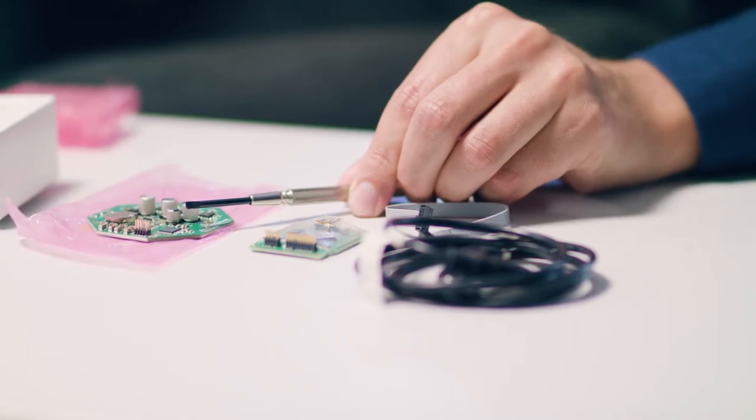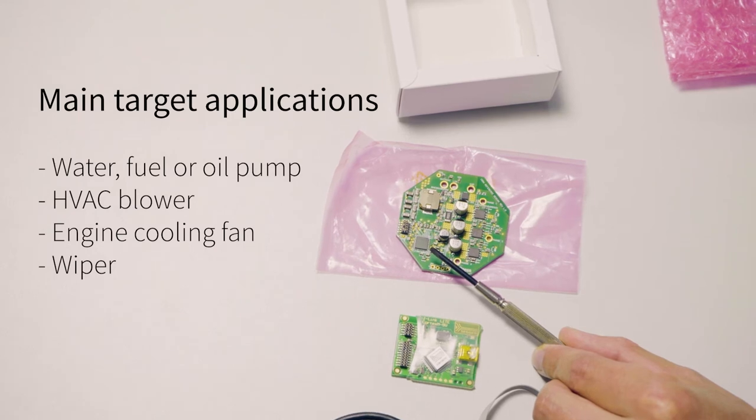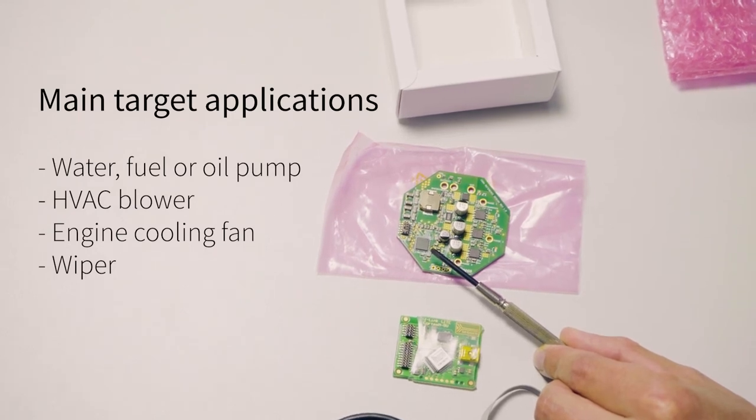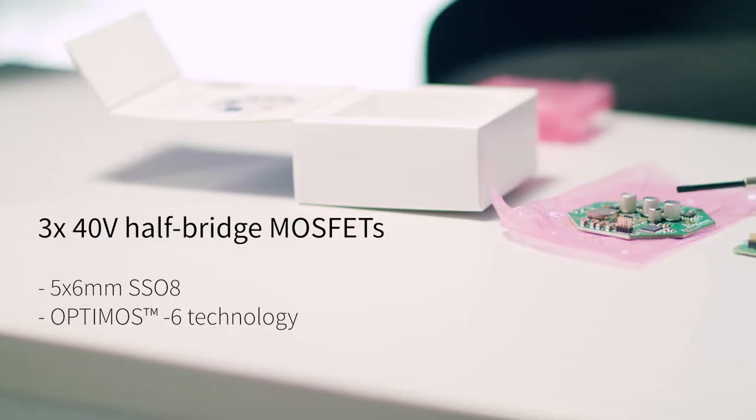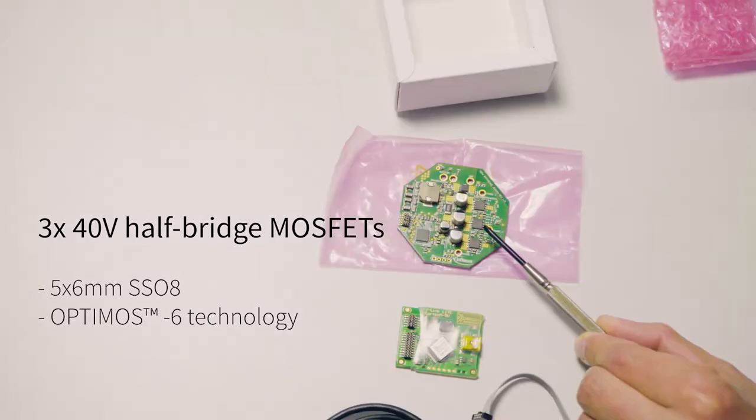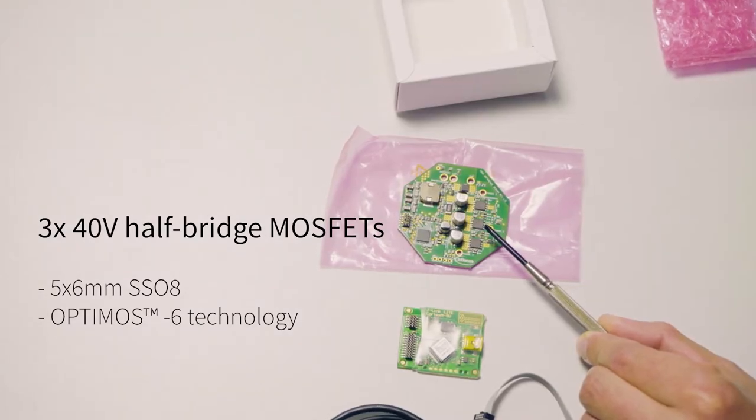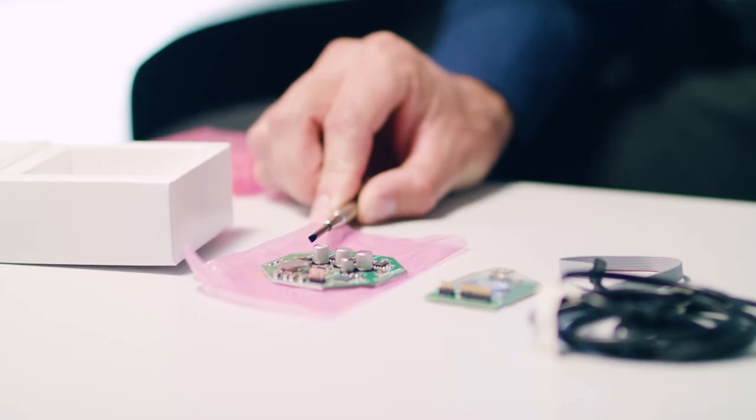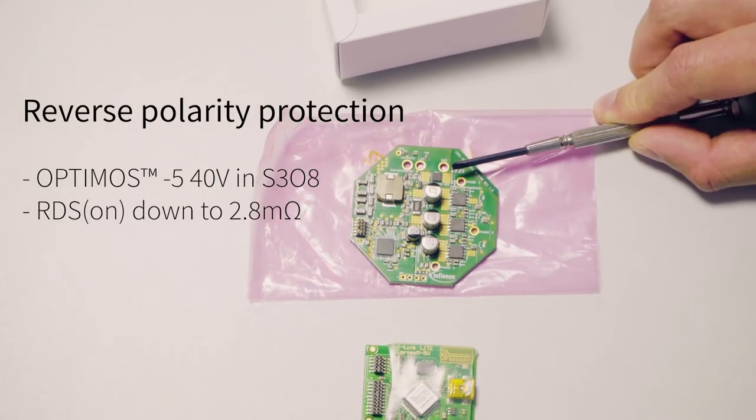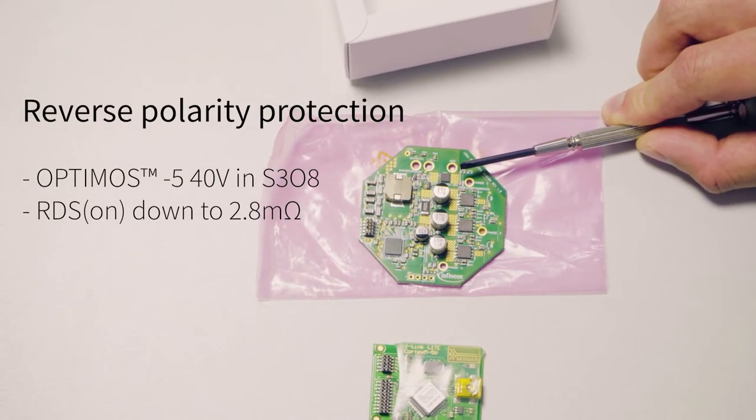In general it is designed for applications that require sensorless or sensor-based BLDC motor control over LIN or PWM. The three 40-volt half-bridge MOSFETs use Infineon's leading Optimus 6 technology. The reverse polarity protection MOSFET is an Optimus 5 40-volt S308 package.